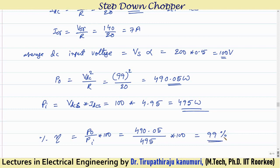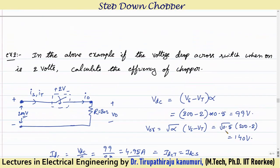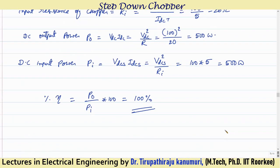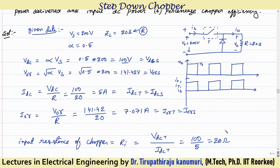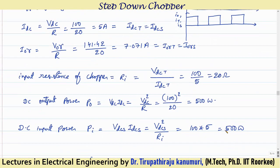For the case of RL load with continuous and discontinuous conduction, the step-down chopper is also called a type-A chopper. A full steady-state analysis for continuous and discontinuous conduction modes will be covered in upcoming lectures. I hope the step-down chopper is completely clear. If you have any queries, leave your comments below. Thank you very much.